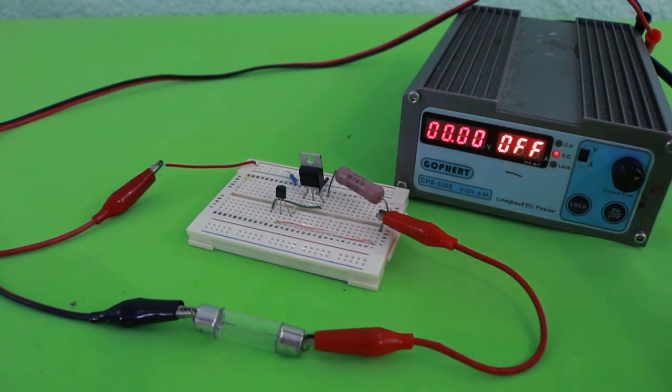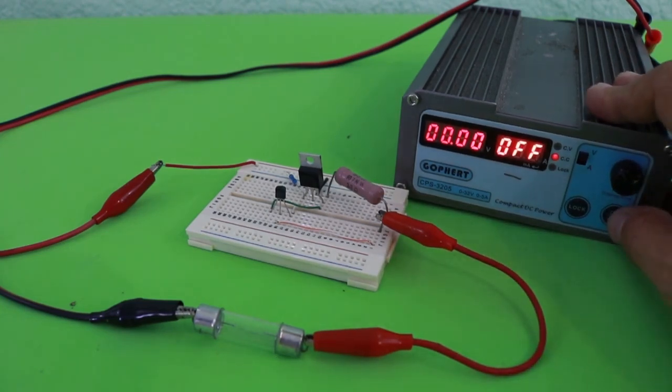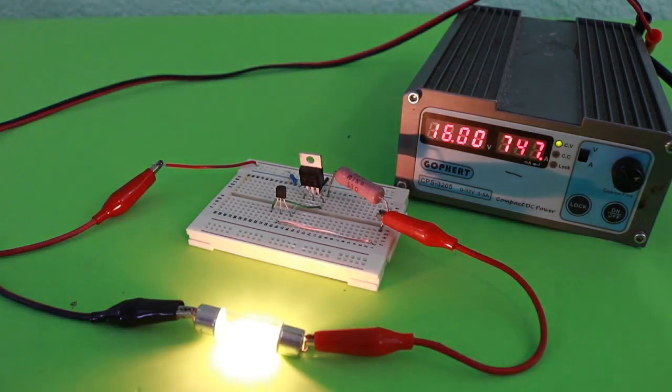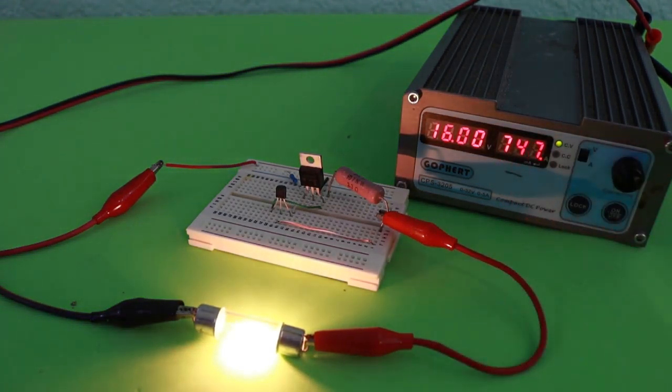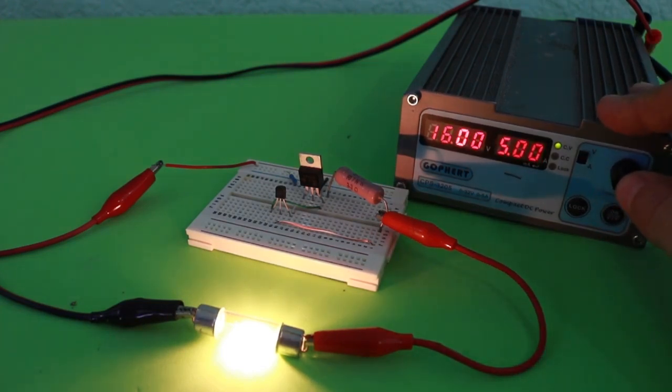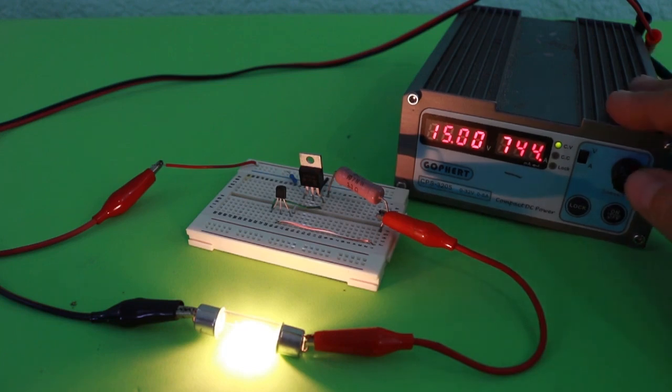The power supply is set at 15 volts, I am going to turn it on, and you can see that the current is practically what we calculated. I am going to move the voltage, it is now at 16, 15 volts, and we have the same current.